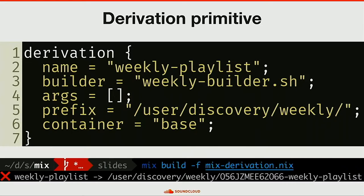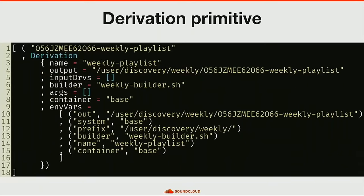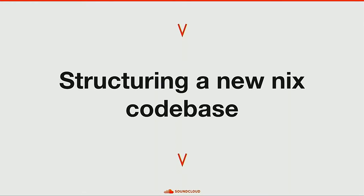When you run mix, it takes the prefix, the hash of the derivation, and the name, and gives you the possibility to build it. This is the pretty-printed memory representation of the derivation — very similar to what you'd find in a .drv file in the Nix store, except it has a container attribute. It has the usual inputs and output, and it tells you with the builder args and environment variables what to run to get that output.